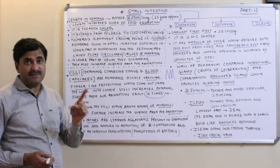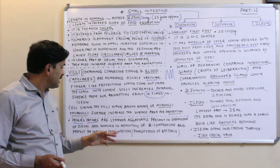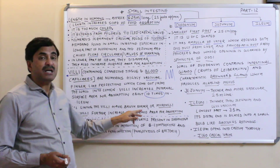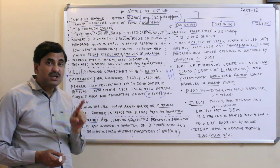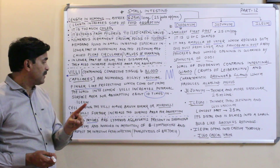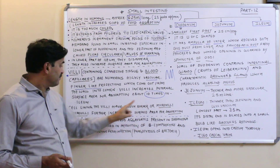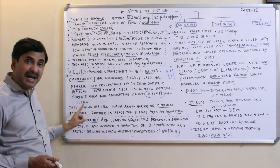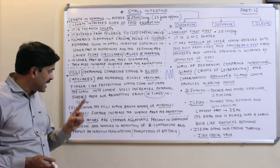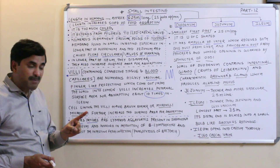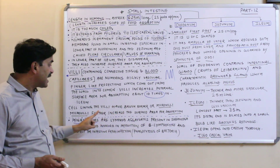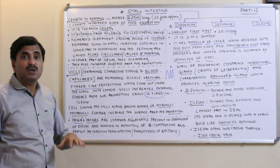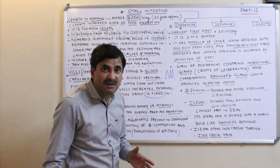The cells lining the villi have a brush border appearance, which is due to the microvilli. So villi consist of microvilli. Microvilli further increase the surface area for absorption. Whether it is plica circulares, villi finger-like projections, or the brush border microvilli — all are increasing the surface area for absorption.